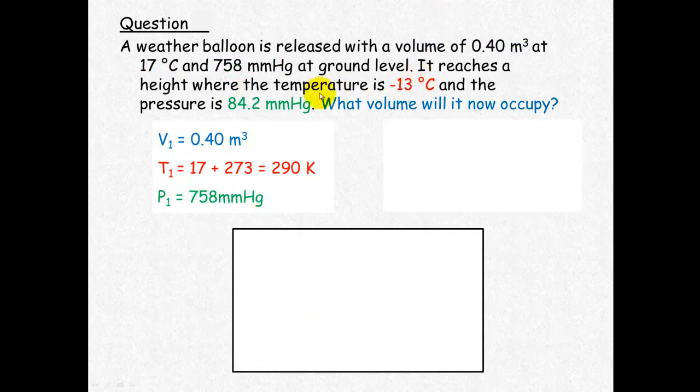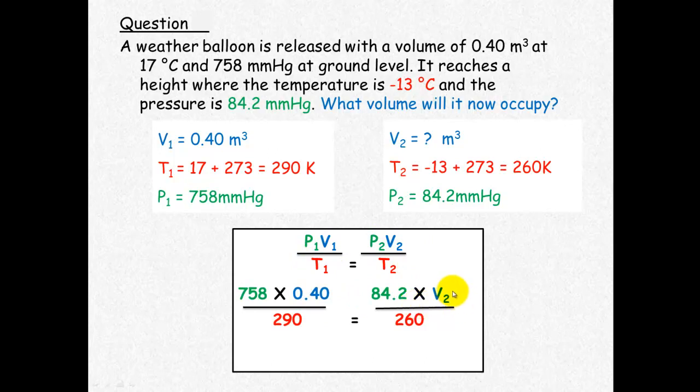Look at our second information. We have T2 equals minus 13 degrees Celsius, which we convert to Kelvin. We have the pressure 2 is 84.2 millimetres mercury. And we're trying to determine what volume 2 is, which will be in metres cubed because it's the same unit. Check at this point your units are the same and that your temperature is in Kelvin. Just plug your information to P1V1 over T1 equals P2V2 over T2 and then just solve for V2. So V2 equals 3.2 metres cubed.